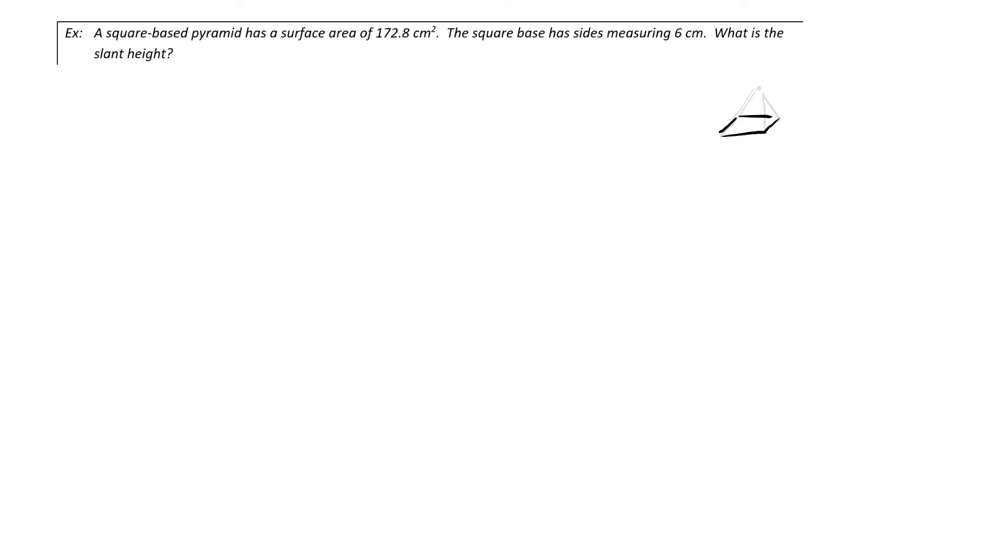So we've been given a pyramid, and we've been asked to find the slant height, which is this part here. We've got the surface area equals 172.8 centimeters squared, and we know that each side of the base is 6 centimeters.